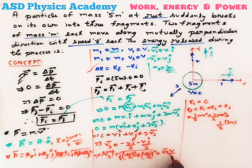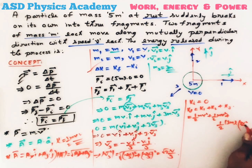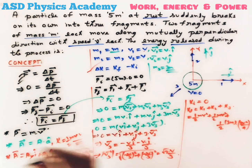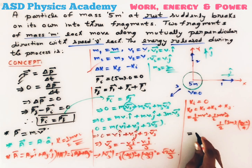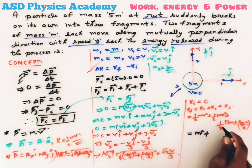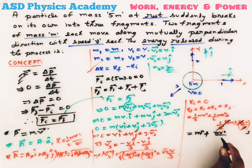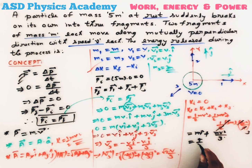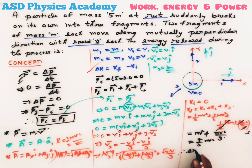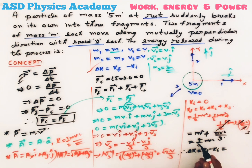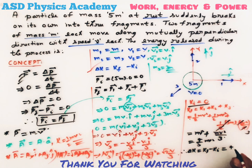So |v3|² = 2v²/9. The total final kinetic energy is: ½mv² + ½mv² + ½·(3m)·(2v²/9) = mv² + (mv²/3) = 4mv²/3. Therefore, the energy released equals final KE minus initial KE = 4mv²/3 − 0 = 4mv²/3.